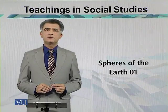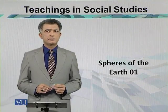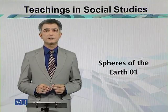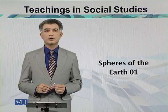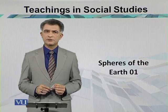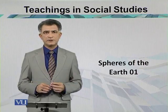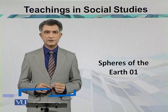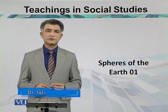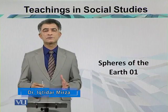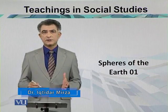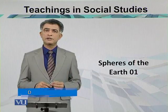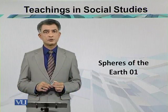In our solar system, we have 8 planets. Among these planets, the Earth has life over it because of the suitability of the climate and environment. This environment controls life over the surface because of certain factors and certain distinctions. These are actually the main spheres which control life.